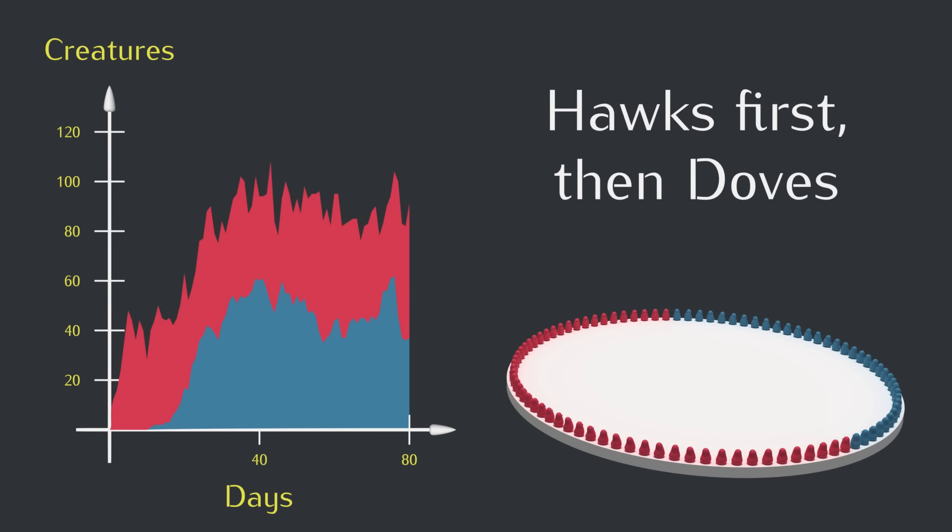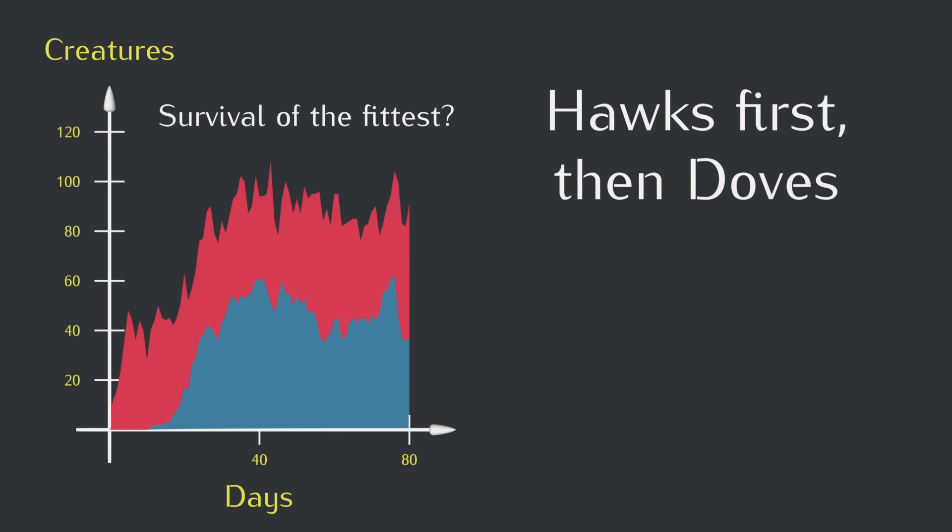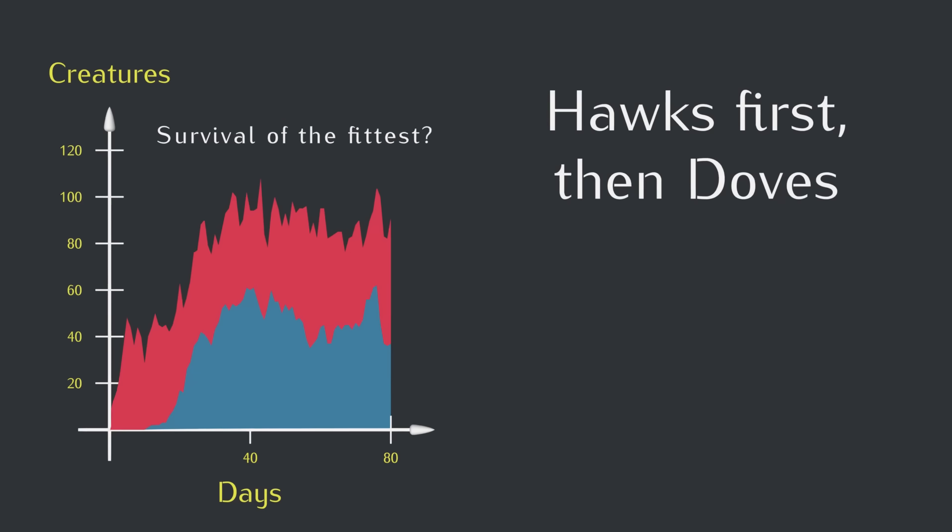So why do we care? Well, this is a situation where survival of the fittest doesn't help us understand what's going on. There isn't one fittest strategy. We can get a better sense for why this is by translating our conflict rules from before into a table.